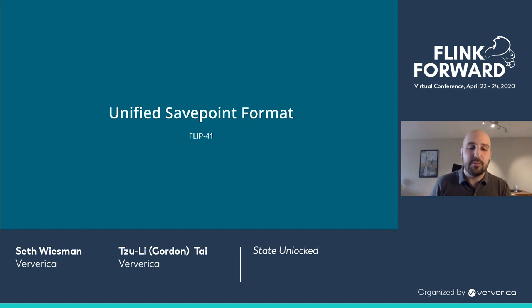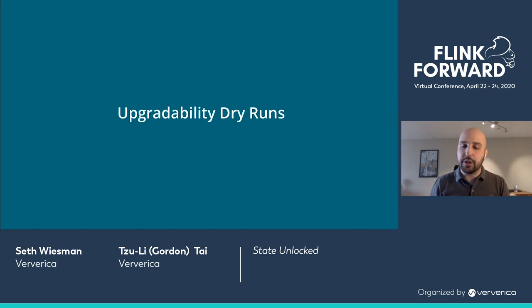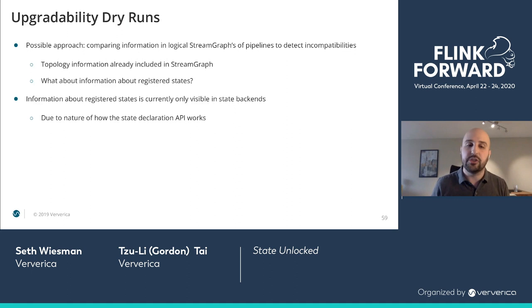On the roadmap, there is an open FLIP for a unified save point format. Currently you cannot take a save point with the heap state backend and restore with the RocksDB state backend, but we would like to make that a possibility. Also on the roadmap is an upgradeability dry run. We talked about how Flink will fail your job if it fails to migrate your schema. It would be great to know if a migration would fail before we ever deploy anything — that is exactly what this feature would potentially solve. There are some ideas about how to do this, but nothing is set in stone yet.